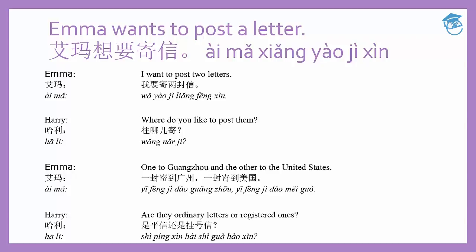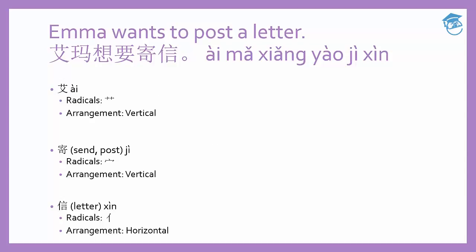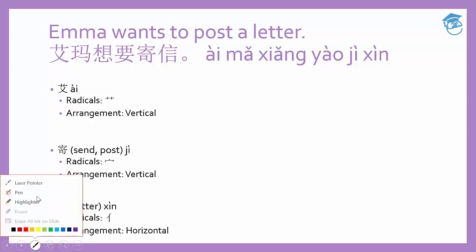We have quite a few new words here. Let's look at them sentence by sentence. First, let's look at the title again so you know how to write the individual words. The title is Emma wants to post a letter: 艾玛想要寄信. The first word is 艾 — it doesn't really have a meaning on its own, but sometimes it is used as a plant's name. The pinyin is 艾, and the radical is on top. The arrangement is vertical because you have top and bottom components. Let's look at how to write 艾.